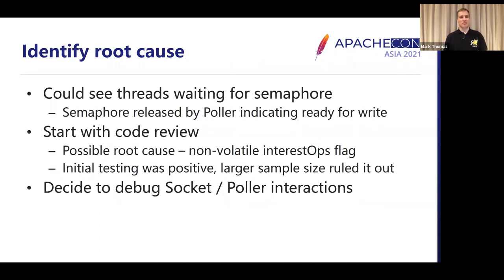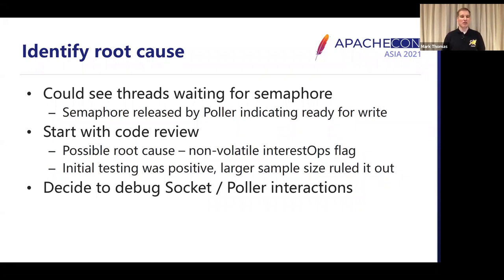So now we want to try and identify the root cause. We could see that the threads are waiting for the semaphore, and we know the semaphore should have been released by the poller indicating it was ready to write — that obviously hadn't happened. So the first thing we do is start with a code review, looking at the handling of the semaphore, the poller, all around the asynchronous I/O write. The first thing I spot is that the interest ops flag, used by the socket wrapper to keep a record of which operations the socket is currently registered with for the poller, was non-volatile but being accessed by multiple threads.